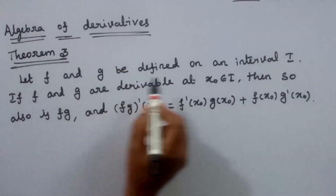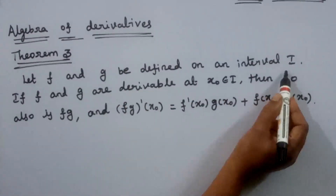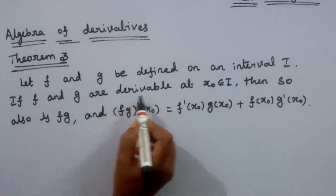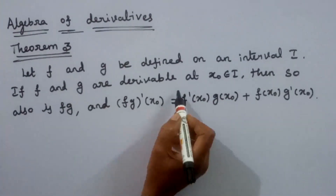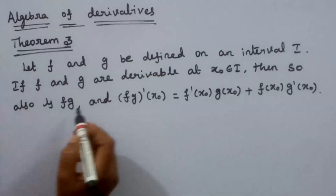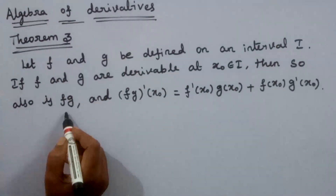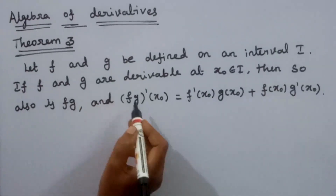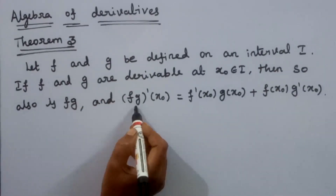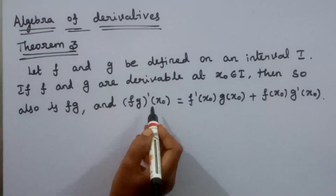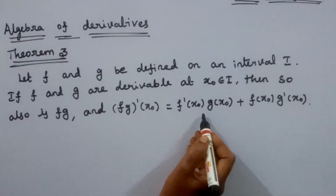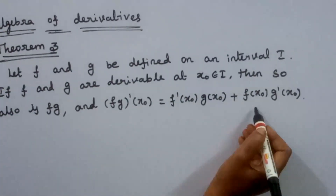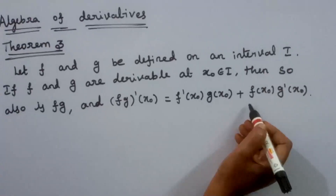Here fg represents the product of two functions defined on the same interval I, and x0 is a point in I. Both functions are derivable at x0. We need to prove the derivative value fg dash of x0 is equal to f dash of x0 into g of x0 plus f of x0 into g dash of x0.